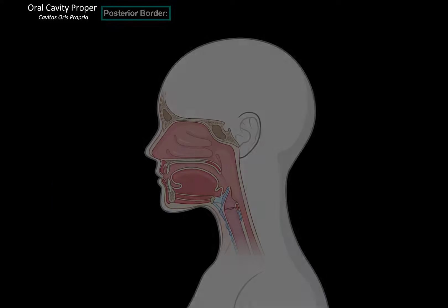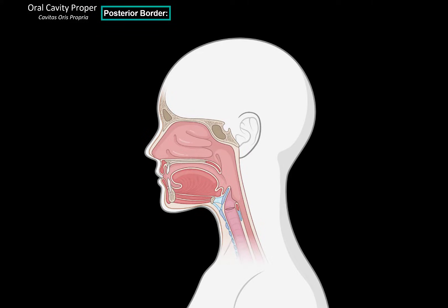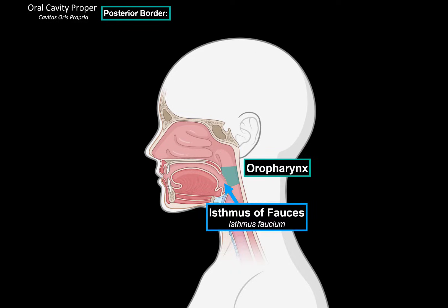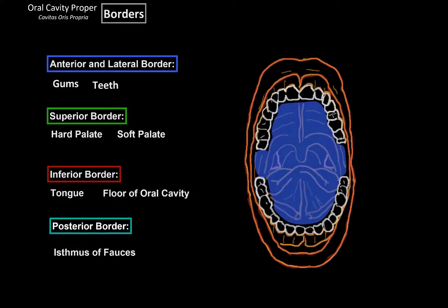That covers the inferior borders. Posteriorly to the oral cavity proper is the oropharynx, and between the pharynx and the oral cavity there's a narrowing called the isthmus of fauces, or oropharyngeal isthmus, which is the bordering line between the oral cavity proper and the pharynx. And that is the oral cavity proper. The next video is going to be about the pharynx.